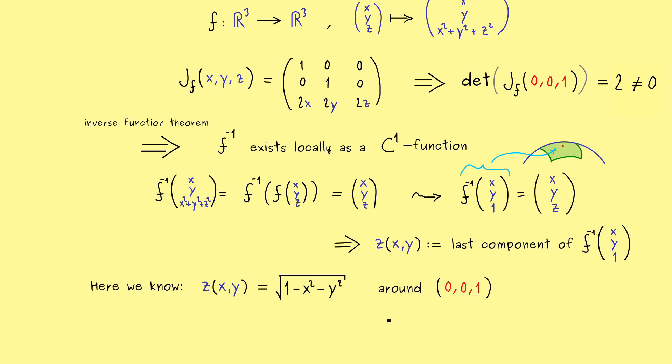This is how we can locally solve the equation around the north pole. So also here it's important to remember that this does not work globally, but just around the point. Indeed, here you can make it work for the whole north hemisphere.